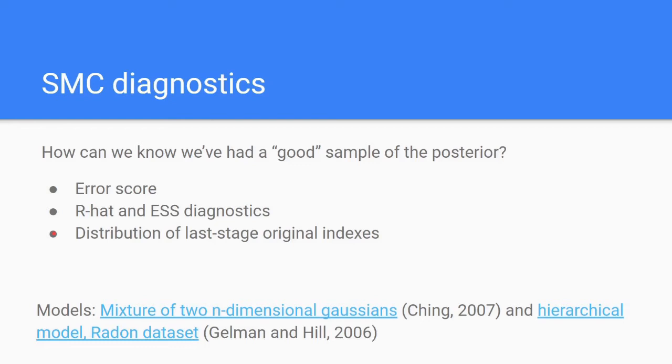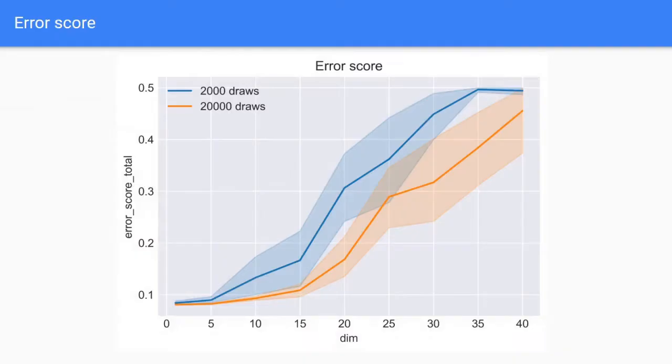To run these tests we've used two different models: one that's a mixture of two n-dimensional Gaussians, and another of a hierarchical model using the radon contamination dataset. Both of these are used as examples in the PyMC3 documentation.